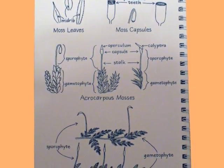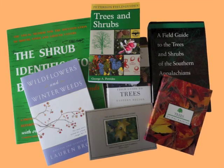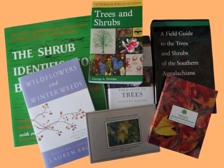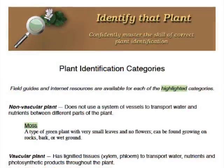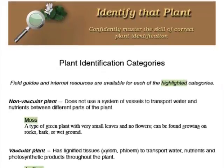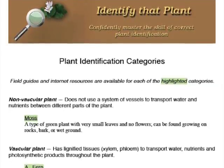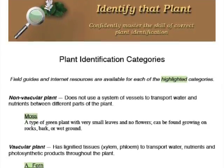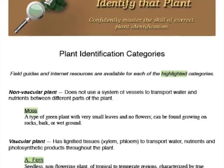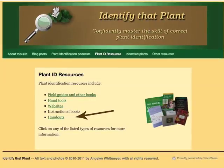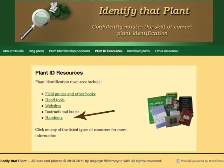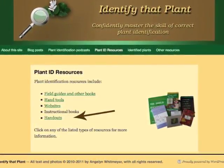People have come up with a variety of ways to categorize a plant. At IdentifyThatPlant.com, you can find and download a two-page outline of broad plant categories which match typical field guides or other resources for identifying plants. Look for the website page called Handouts.